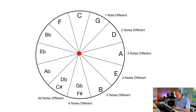We started out with all white notes, and by the time we end up right at the bottom of the circle of fifths, every single note is different. That's the whole point. The circle of fifths is all about keys, not notes or chords — it's about which scales and keys are similar and which ones are different. That's really the whole point of the thing.